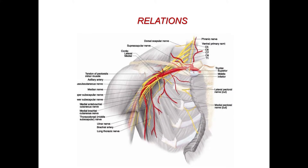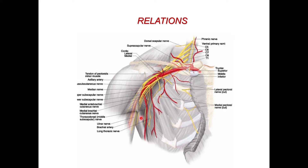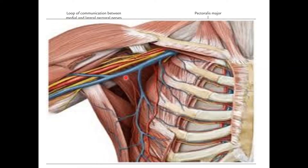Moving on to the relations of the axillary artery — each part has specific relations. Overall, the entire axillary artery is related to the cords and branches of the brachial plexus. The axillary vein is always located inferomedial to the axillary artery throughout its entire course.